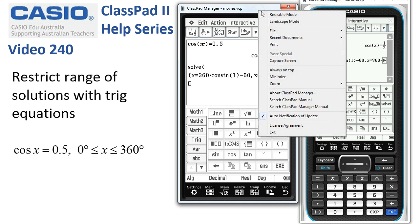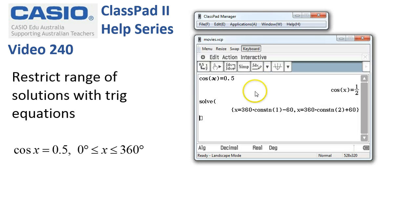I'll go into landscape mode. There it is - you can see the whole general solution here: negative 60 plus 360 times a constant, or positive 60 plus 360 times some other constant.